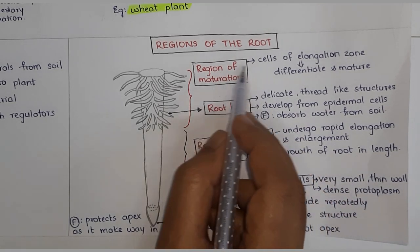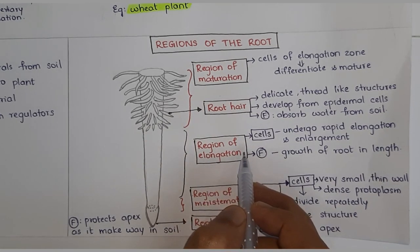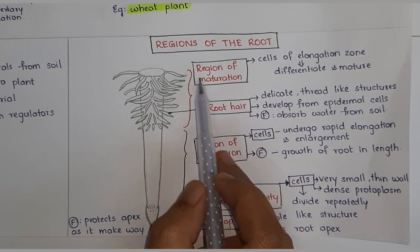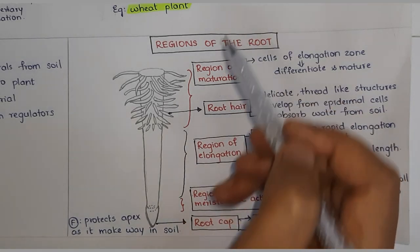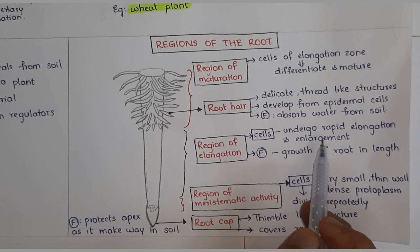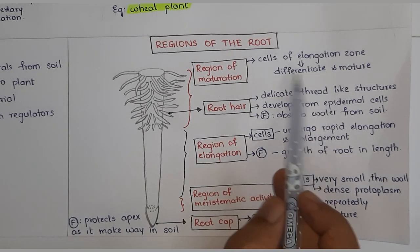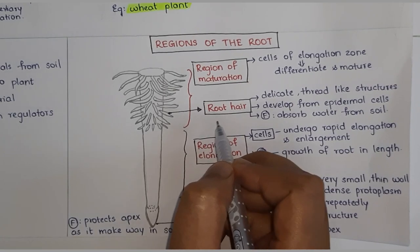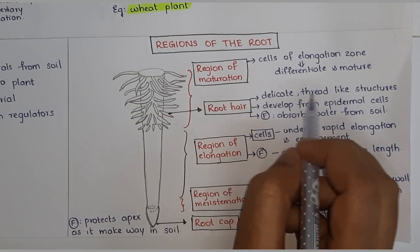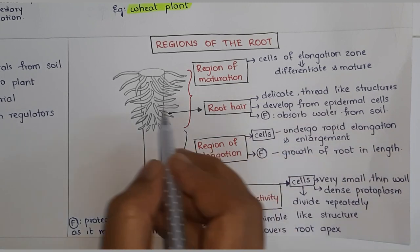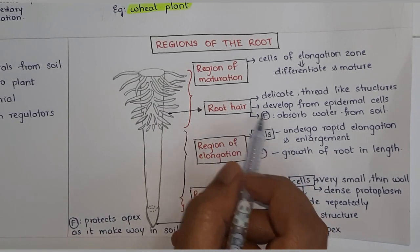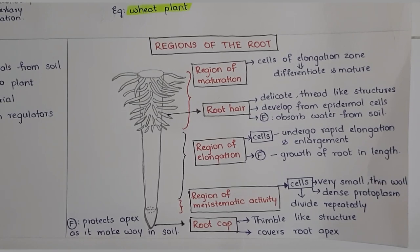Next is the region of maturation. The cells in the region of elongation differentiate and gradually mature to form the cells in the region of maturation. To summarize: cells divide in the meristematic region, the divided cells elongate and enlarge, then the enlarged cells differentiate and become mature. In the region of maturation, root hairs are present — delicate thread-like structures that develop from epidermal cells. Their function is to absorb water from the soil.